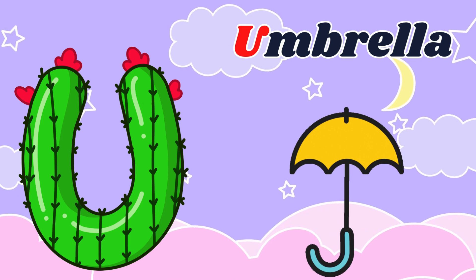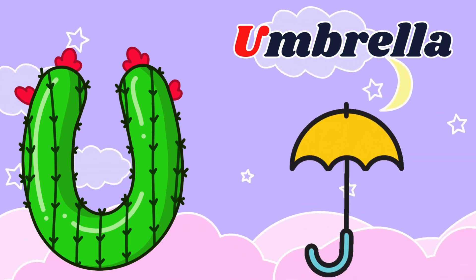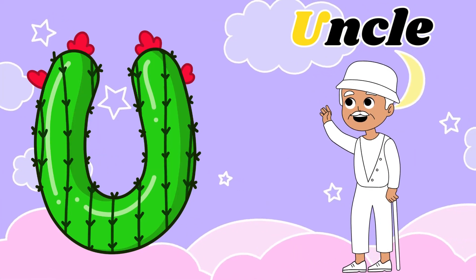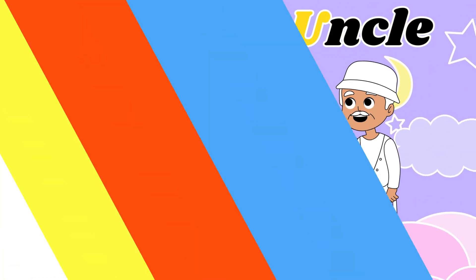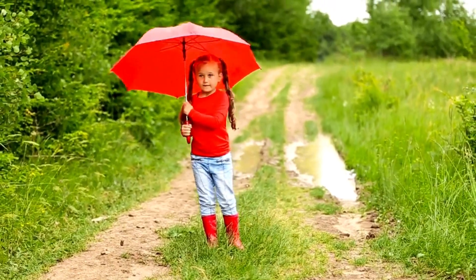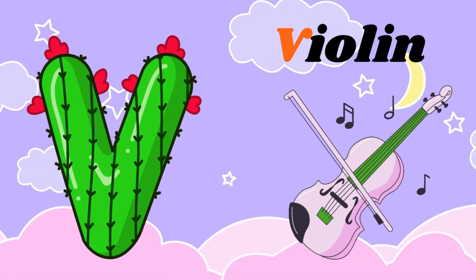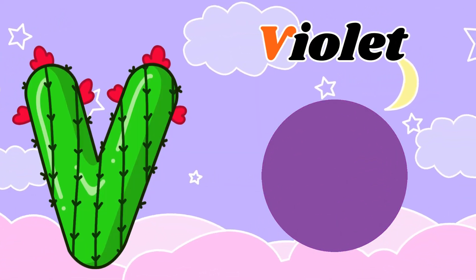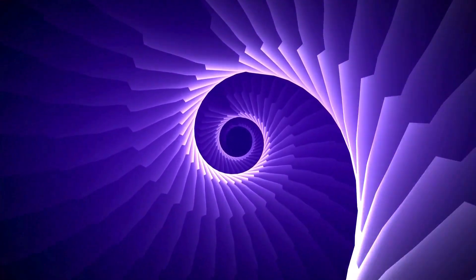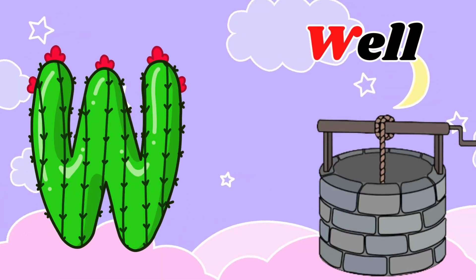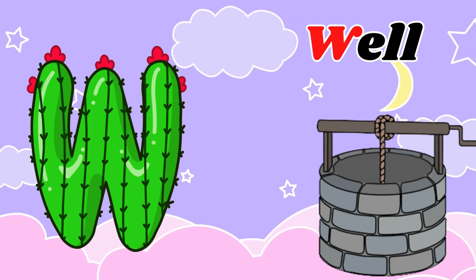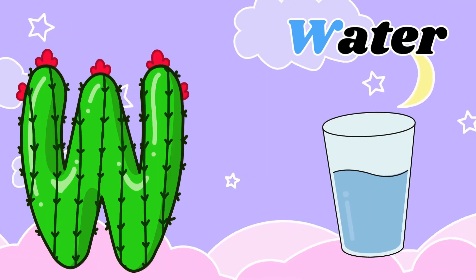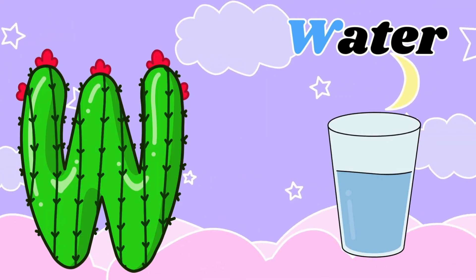U for Umbrella. V for Violin, V for Violet. W for Well, W for Water.